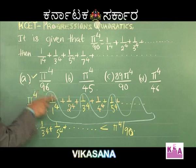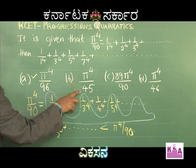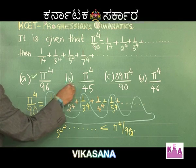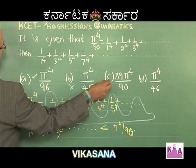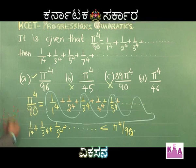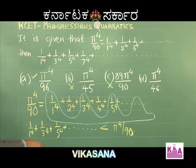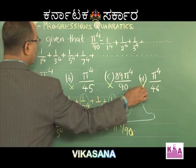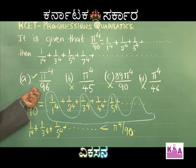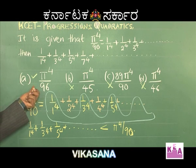Let us verify the other options. π⁴/45 is twice π⁴/90, which is impossible as our answer must be smaller. 89π⁴/90 is a very large number, also impossible. π⁴/46 has denominator 46 which is less than 90, so it is larger than π⁴/90 — also impossible. Therefore only option A (π⁴/96) is correct.